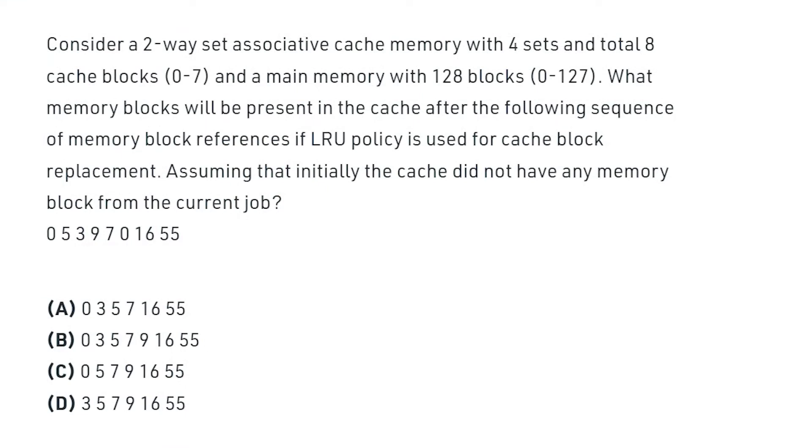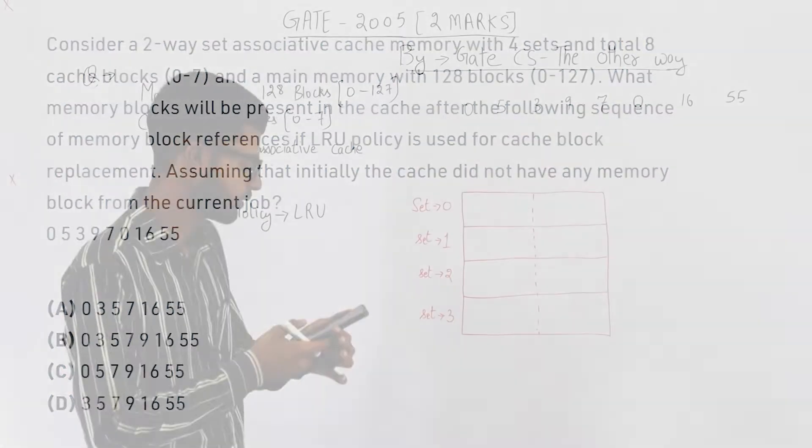Consider a 2-way set associative cache memory with 4 sets and total 8 cache blocks, numbered from 0 to 7. And a main memory with 128 blocks, numbered from 0 to 127. What memory blocks will be present in the cache after the following sequence of memory block references? If LRU policy is used for cache block replacement, assuming that initially cache did not have any memory block from the current job. So the sequence, you can just have a look at this sequence.